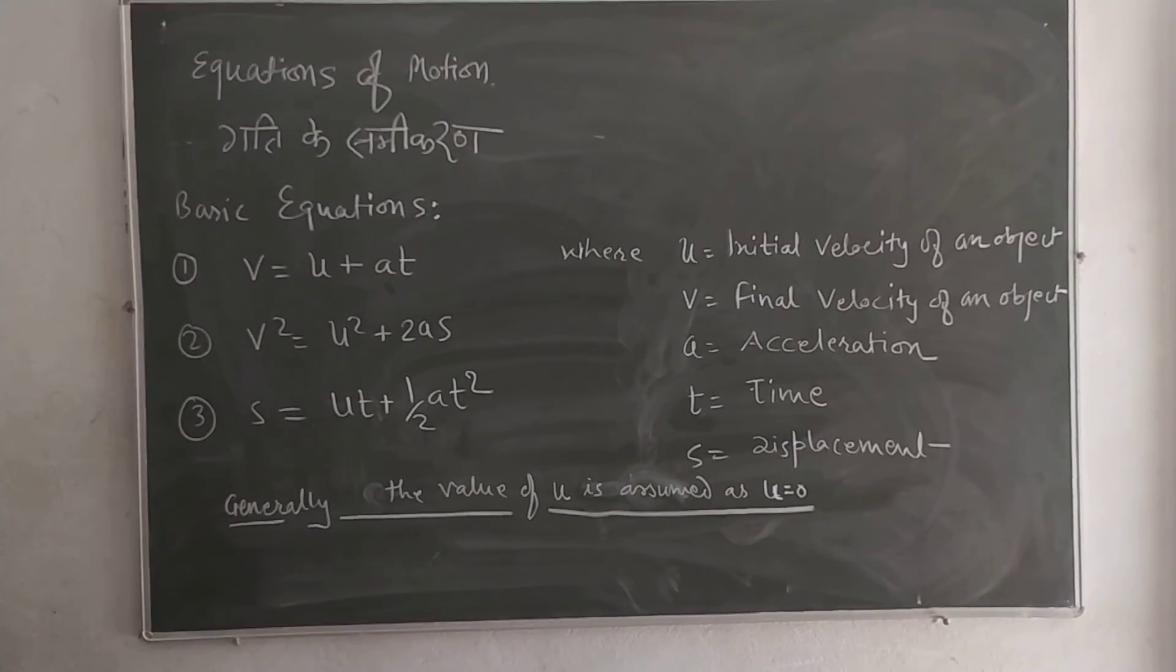So the first is initial velocity, u equals initial velocity, v denotes final velocity.